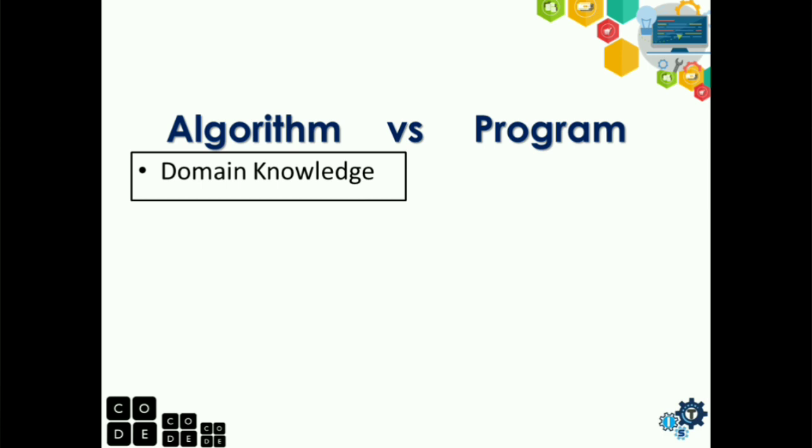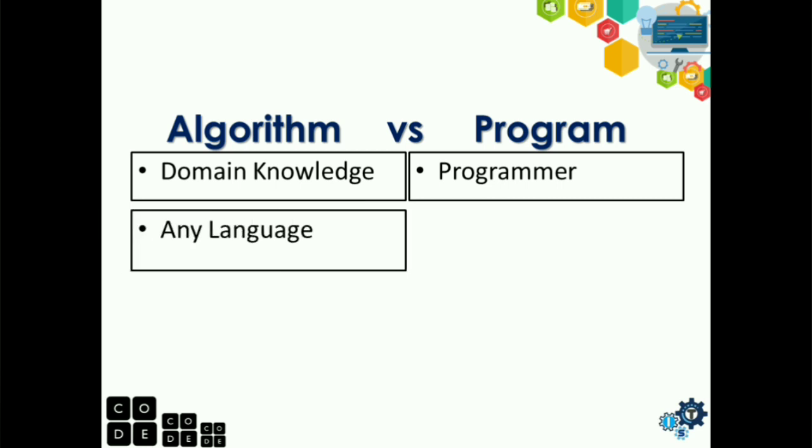Then who can write a program? A program is developed by a programmer. What language is used? Algorithm can use any language. It can be a combination of English language or mathematical language, while a program is created using programming language.